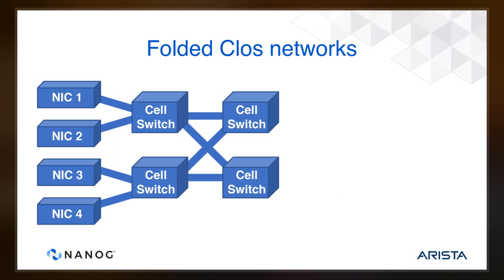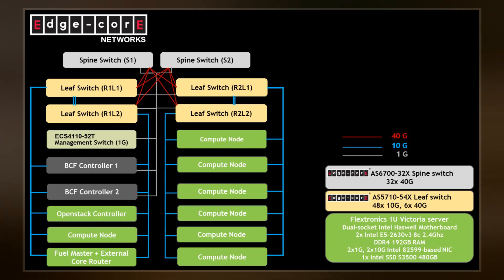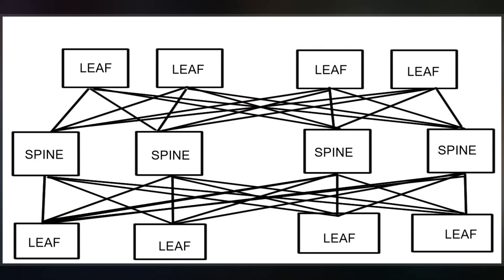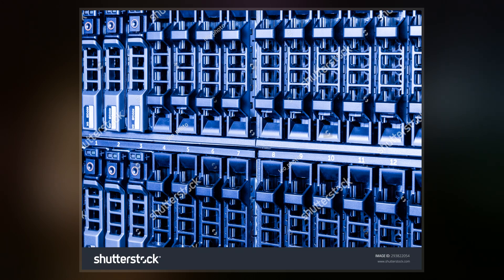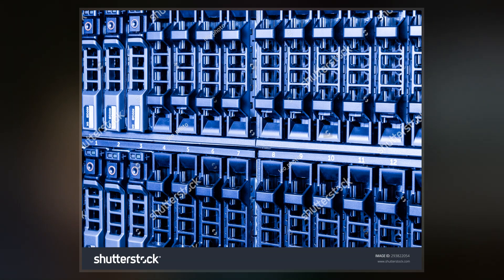Circuit switching arranges a dedicated communications path for a connection between endpoints for the duration of the connection. This sacrifices total bandwidth available if the dedicated connections are poorly utilized, but makes the connection and bandwidth more predictable and only introduces control overhead when the connections are initiated rather than with every packet handled as in modern packet switched networks.